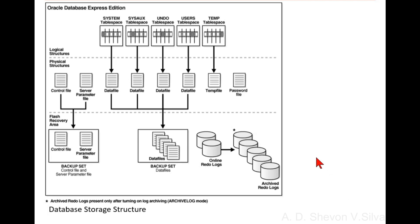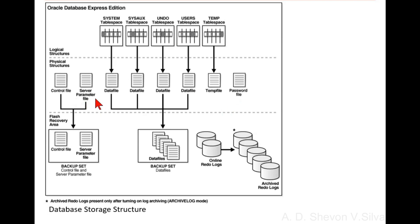Here you can see the logical structures, physical structures, and flash recovery area. In the logical structure: system tablespace, aux tablespace, undo tablespace, users tablespace, and temp tablespace. In the physical structures: control files, server parameter file, data files, temp file, and password file.